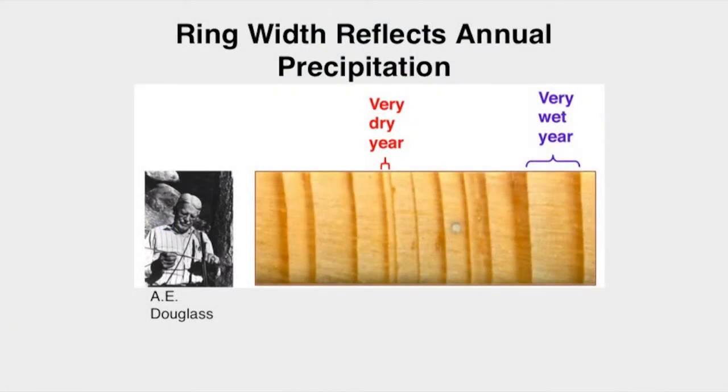In the early 1900s, A.E. Douglas of the University of Arizona recognized that patterns of wide and narrow rings in ponderosa pines and other native conifer trees closely corresponded to the annual precipitation, wet years and dry years in the Southwest.